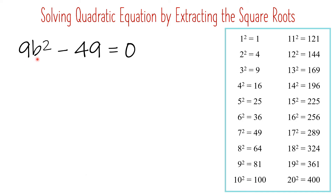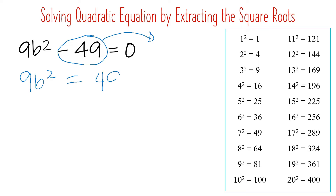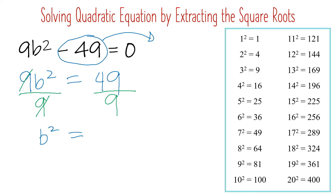Another example: 9b squared minus 49 equals 0. Copy 9b squared, then transpose negative 49 to the other side — it becomes positive 49. Since we still have a numerical coefficient, we cancel it by dividing both sides by 9. Cancel 9, so we only have b squared on this side, equals 49 over 9. Since 49 divided by 9 does not give a whole number, we leave it as 49 over 9. We may now start extracting the square root, placing a radical on both sides.